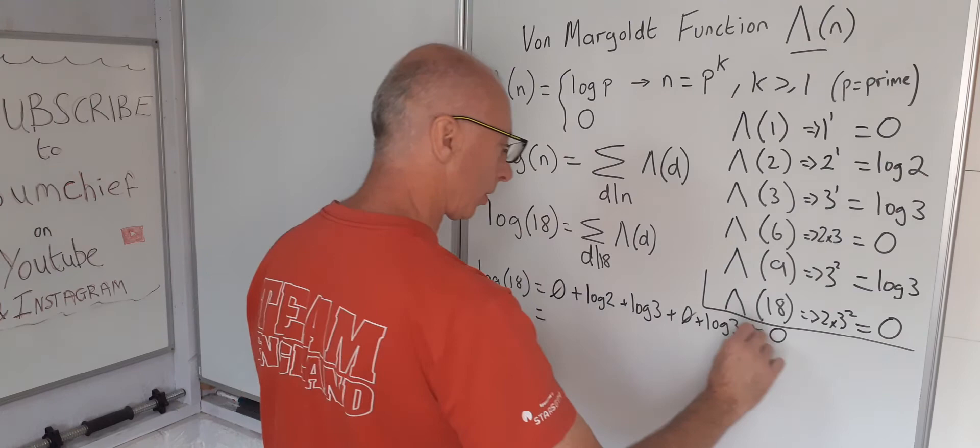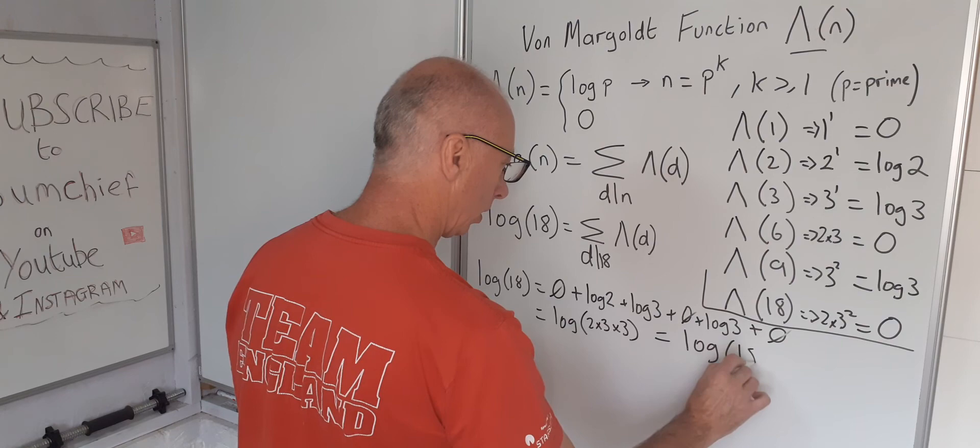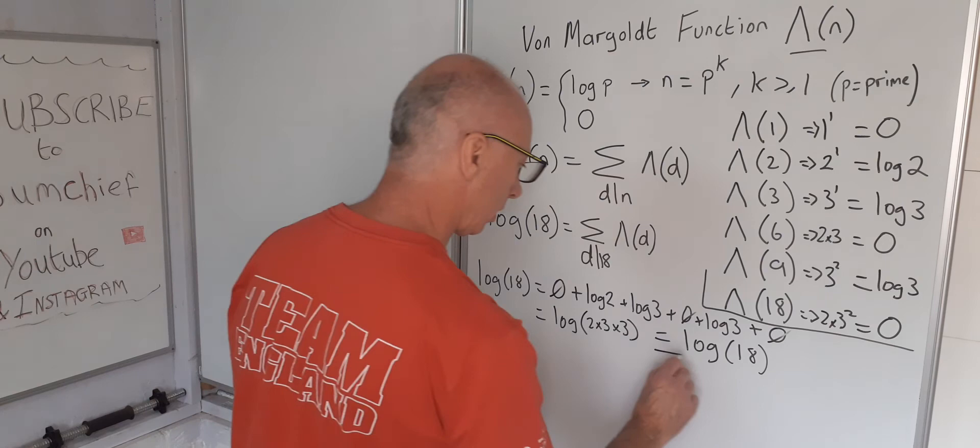We can use the log property. All the zeros will be cancelled out. Cross them out. And then we end up with log of 2 times 3 times 3 which equals log of 18. Log of 18 equals log of 18. There we go.